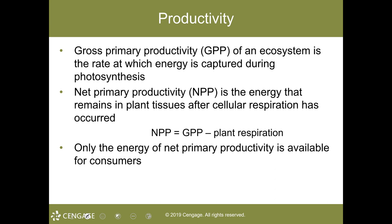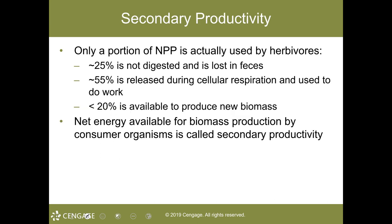Gross primary productivity is the rate at which energy is captured during photosynthesis. Net primary productivity is the amount of biomass found in excess after a plant's cellular respiration for normal activities — and it's the net primary productivity that is available for consumers. Of that, only a portion can be used by herbivores: about 25% is not digested and lost, about 55% of net primary productivity is lost during respiration, and less than 20% is used for new biomass. This is why we eat — it's not much of what you take in that can actually be used.